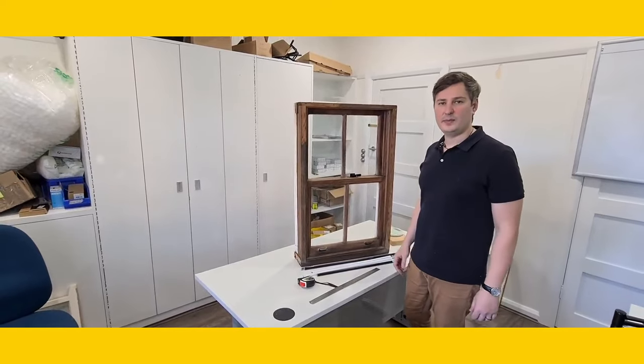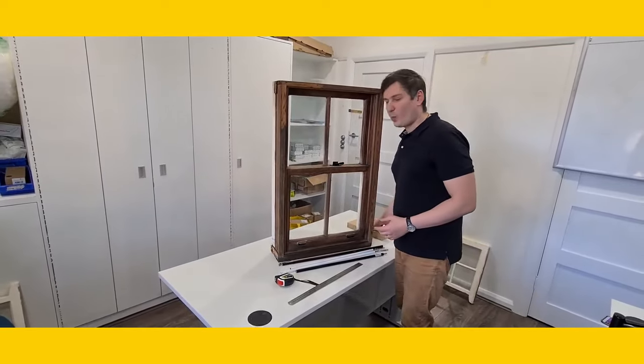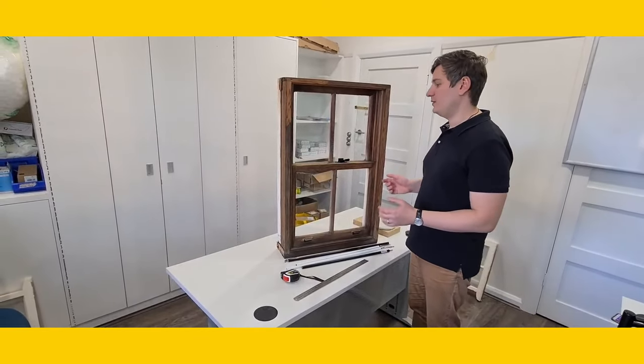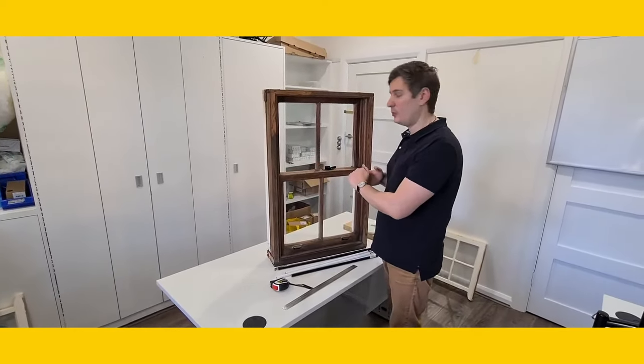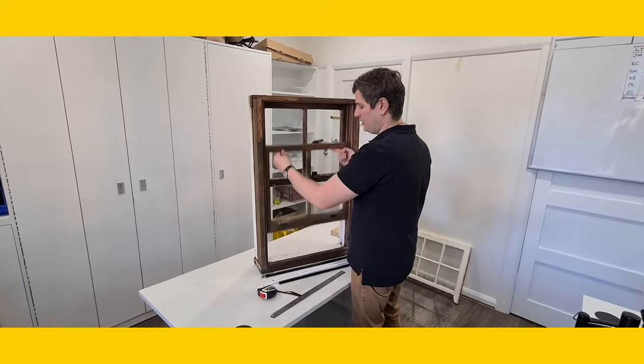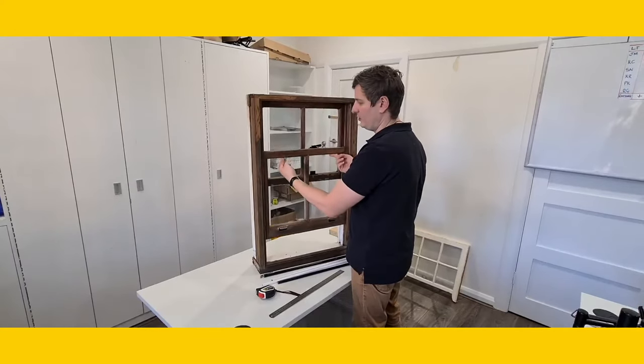The next step we will need to do is weigh the actual window itself. The best way to weigh a sash window is to remove any of the existing spiral balances so that the window is sliding up and down on its own and there's nothing holding the weight of the window.